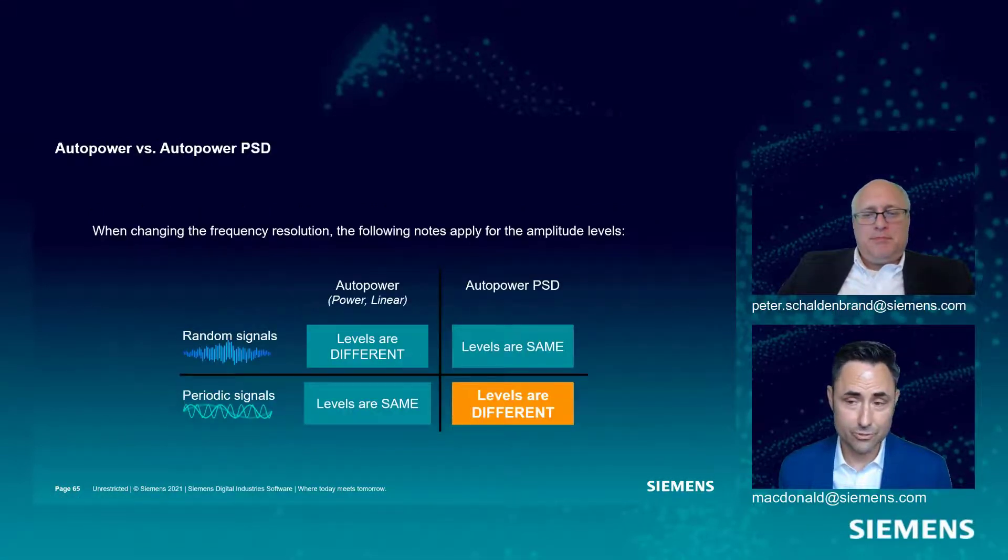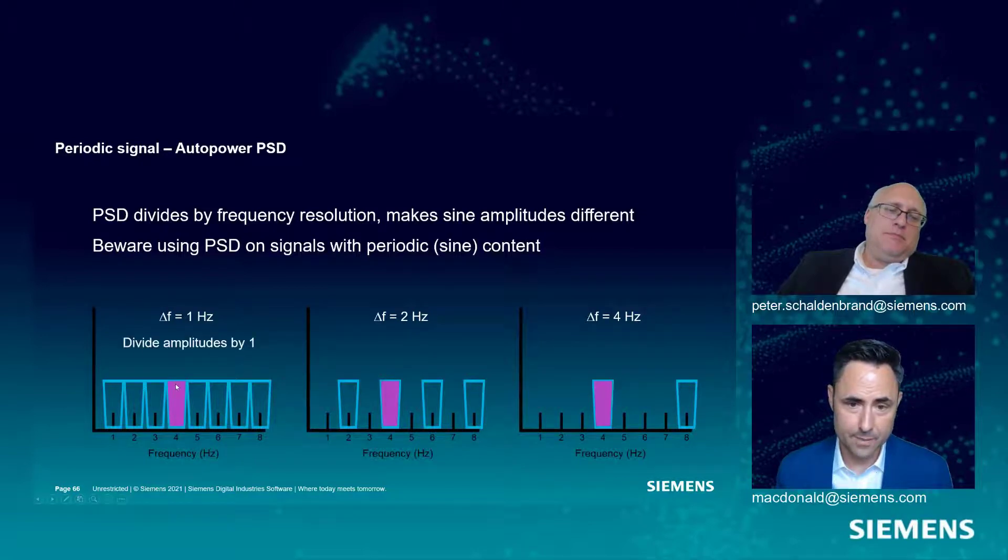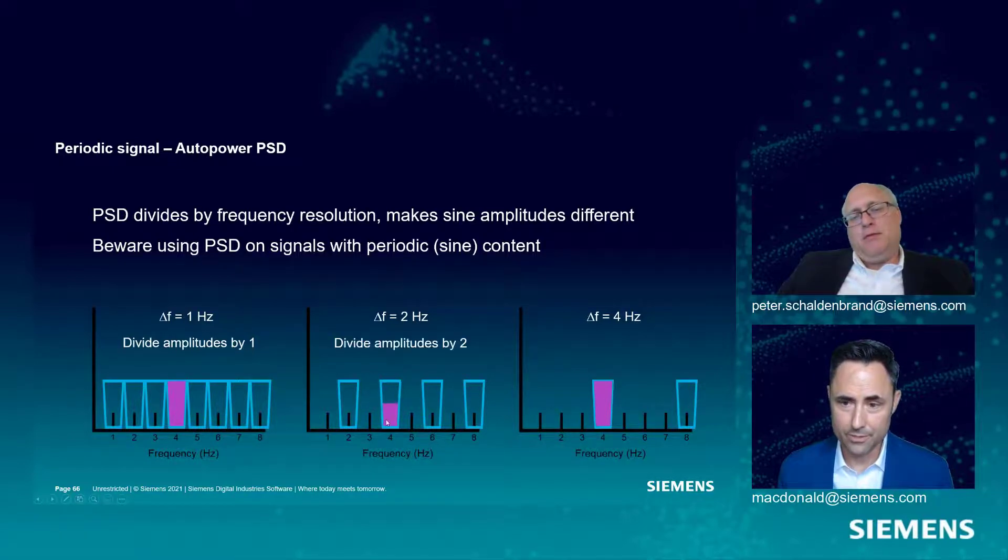Now, PSD is going to come along and screw this up for us, though. Because, again, we're going to divide by the spectral resolution. So this one hertz delta F guy, he gets divided by one. He gets to keep all his Kool-Aid. Delta F equals two. We're going to divide this amplitude by two.